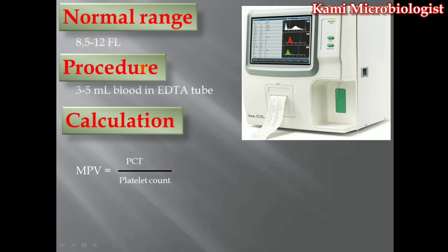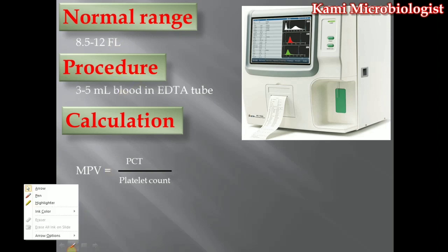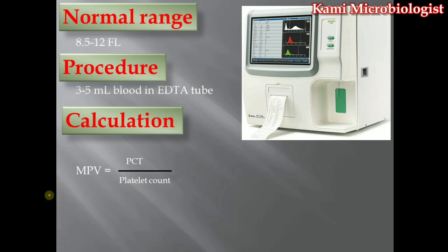Regarding the procedure: we need 3 to 5 ml of blood collected in an EDTA tube, and then we run it using a hematology analyzer machine. As you can see, we remove the cap and dip the needle into the blood in the EDTA tube, then press the button. The machine takes the blood and after about five minutes it gives not only the MPV value but also all the other CBC parameters as well.